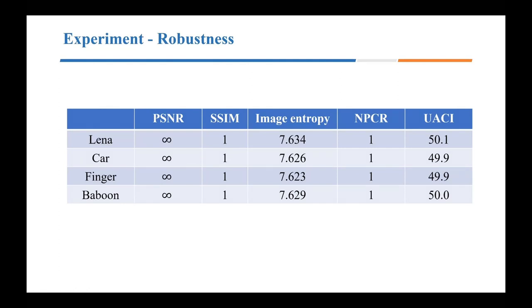In this slide, we show several evaluation metrics commonly used in the field of image privacy protection, such as PSNR, SSIM, image entropy, NPCR, and UACI. Using image entropy as an example: image entropy is a statistical feature that reflects the average amount of information in the image. In our experiment, we calculated the image entropy of Lena, finger, and car images. The image entropy of Lena is 7.634, car image is 7.626, and finger image is 7.623, which indicates that the risk of accidental information leakage is very low.